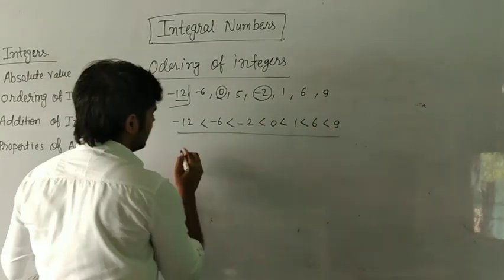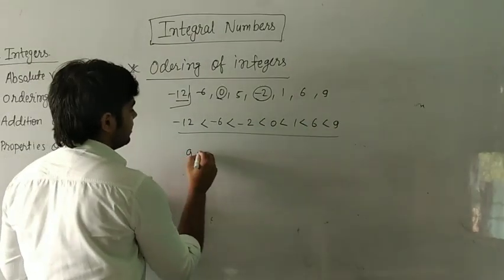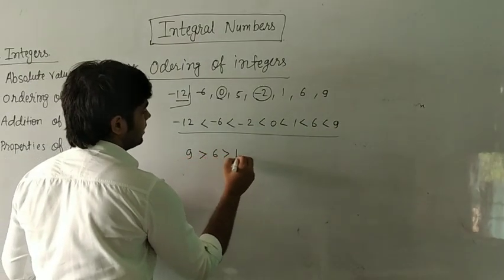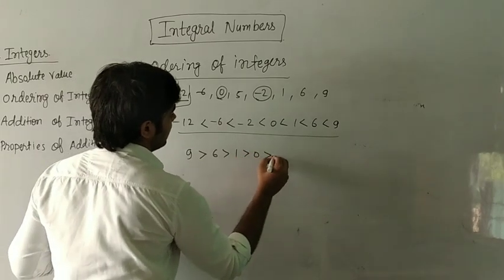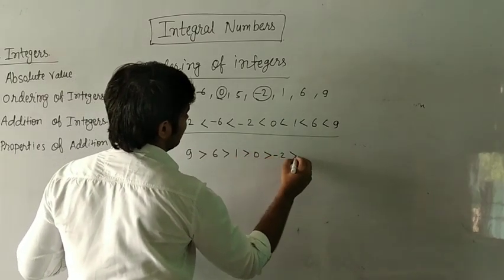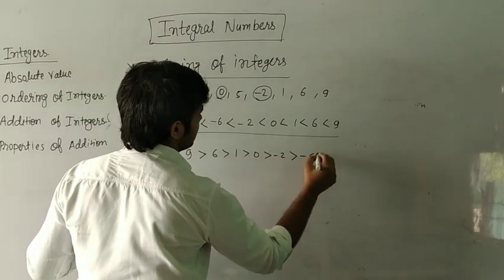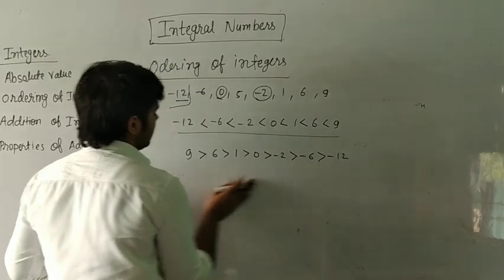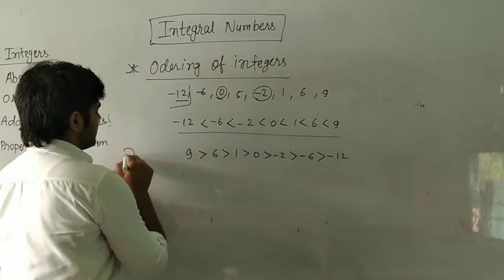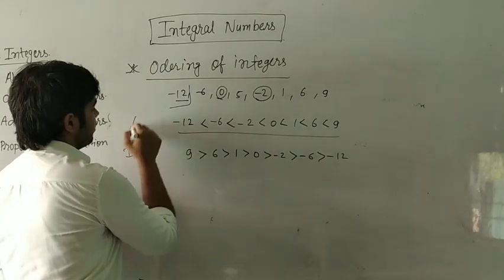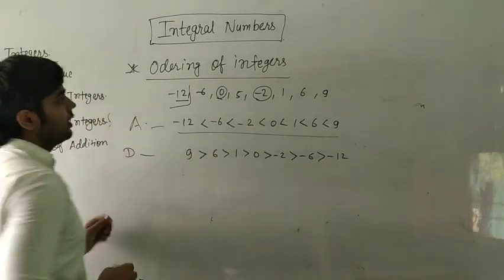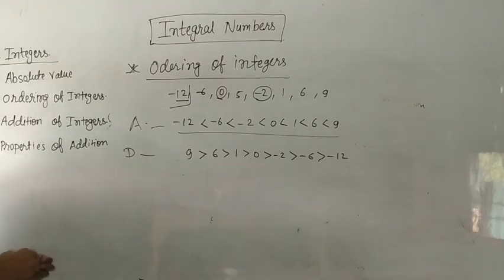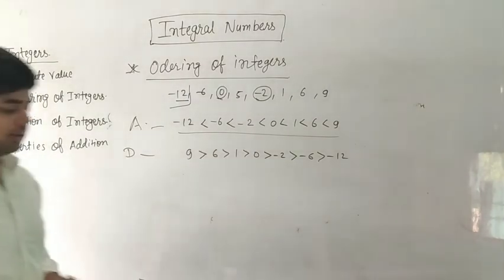For example: 9 is greater than 6, then 1, then 0, then minus 2, then minus 6, then minus 12. This is descending order. Then we also have ascending order. So that is the ordering of integers.